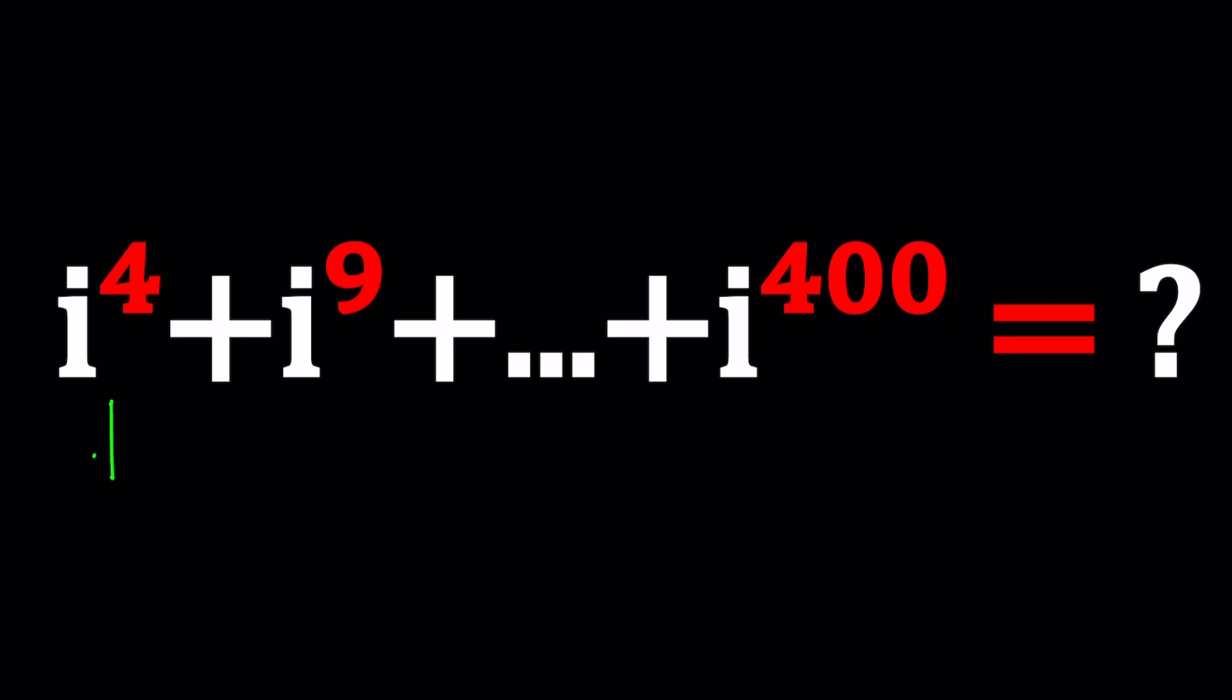i to the fourth power, as you should know, is 1. Because by definition, i squared is negative 1. And if you square both sides, you get 1.